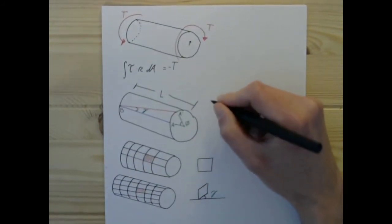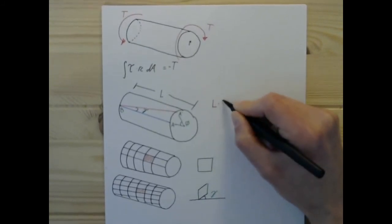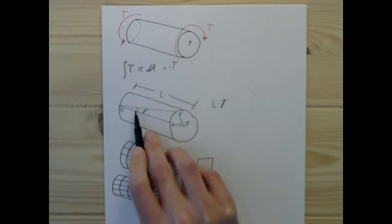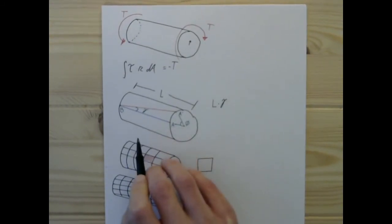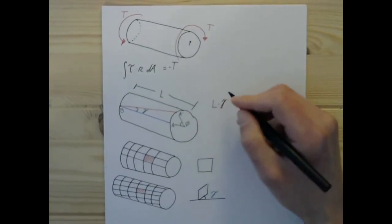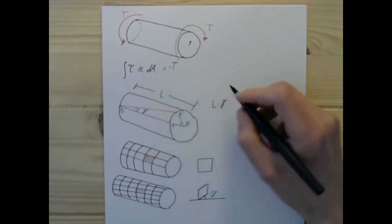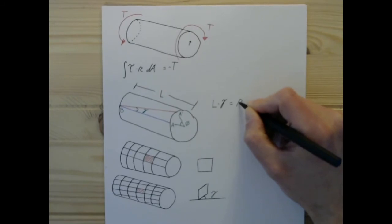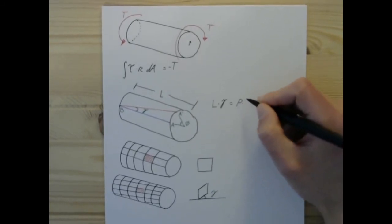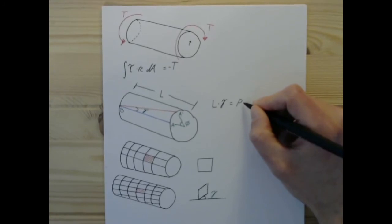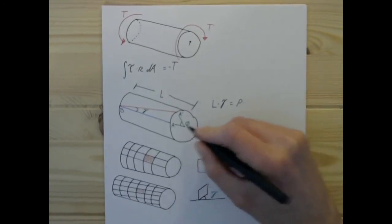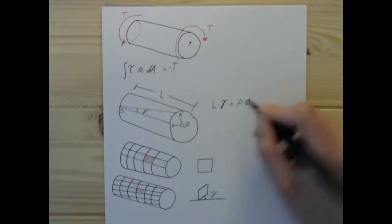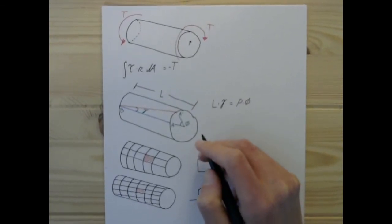...we can write that L, the total length, times the rotation right here, which is the shear strain outside on the outer edge, it's going to be equal to—let's call the radius rho, because that's what the book, I believe, does—times phi, our rotation right there.